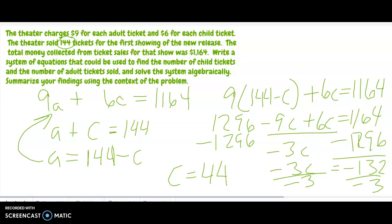Negative 132 is equal to negative 3c, divided by negative 3. C equals 44. So there's 44 child tickets. Well that means if there's 44 child tickets, a equals 100. So they would sell 100 adult tickets and they sold 44 child tickets. And there's your answer.